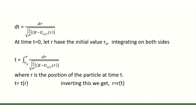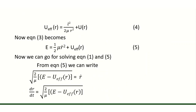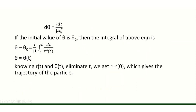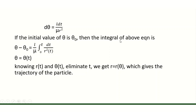Now the solution for r is found. The solution for theta can be found from equation 1: d theta equals L dt by mu r squared. Assuming the initial value of theta is theta0, integrating both sides gives theta minus theta0 equals L by mu times the integral from 0 to t of dt by r squared of t. So we get theta as a function of t.